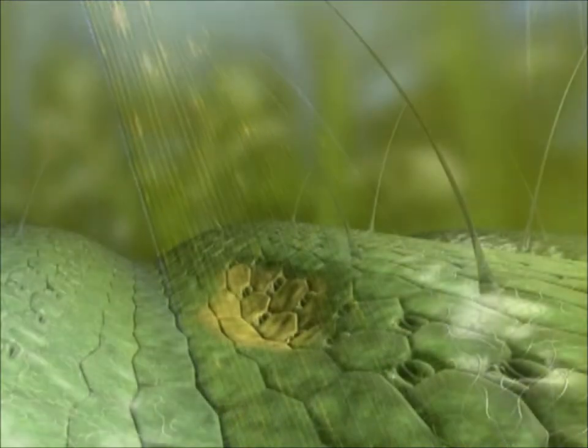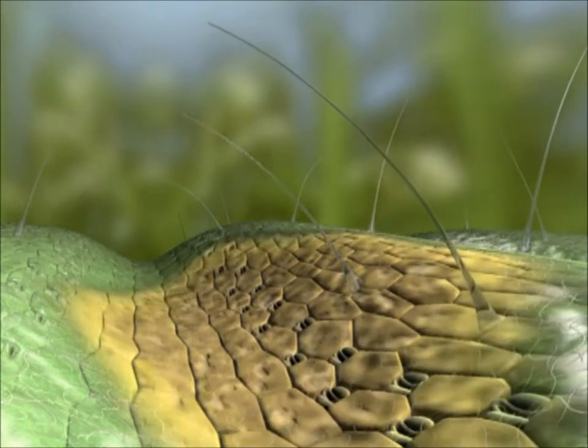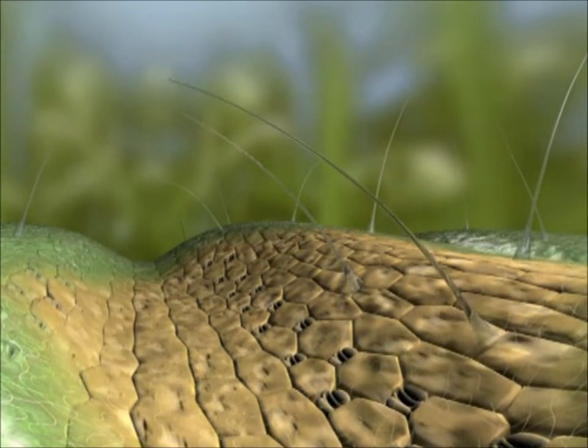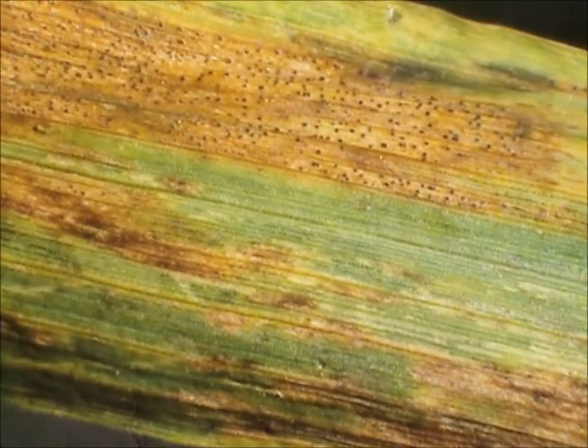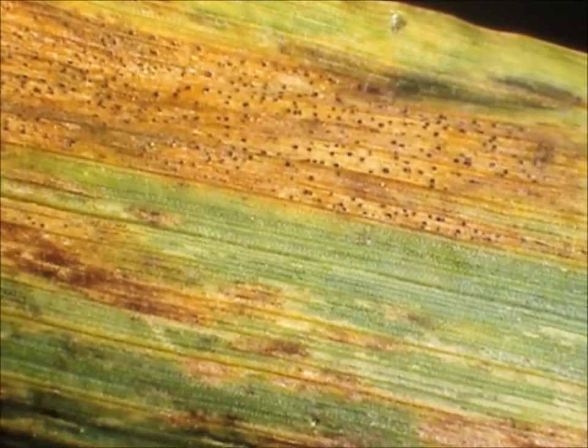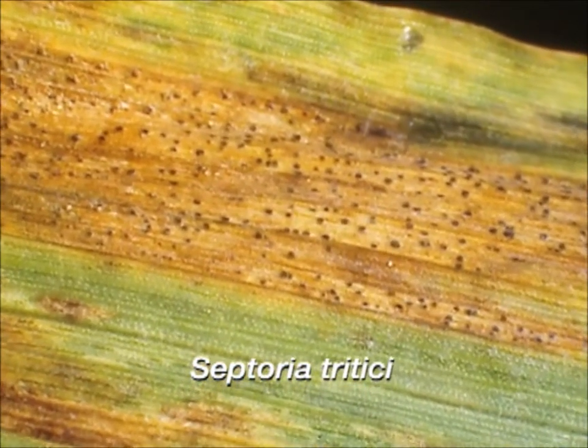The cells collapse and the chlorophyll, necessary for photosynthesis, is destroyed. As a result, the leaves become increasingly yellow and later brown. In this necrotic leaf tissue, the pycnidia develop—asexual fruiting bodies of the anamorph, Septoria tritici.